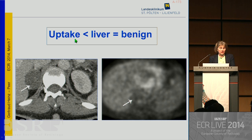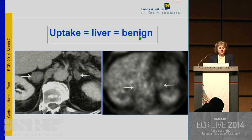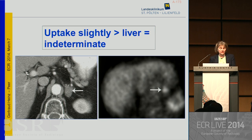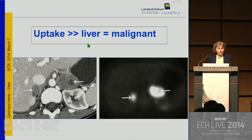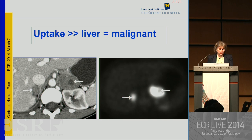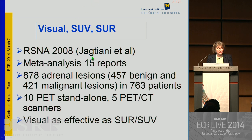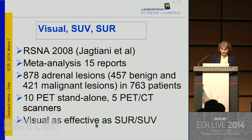In a patient with underlying rectal cancer presenting with a small right adrenal mass, there is clearly increased uptake of the FDG tracer indicating metastasis. As a general rule: if tracer uptake is below liver uptake, it is very likely a benign lesion; if equal to the liver, it is most likely benign; if slightly higher than the liver, the lesion is indeterminate; and if clearly higher than the liver, it is most likely a malignant lesion or metastasis. Yaktiani and coworkers confirmed that visual analysis is as effective as calculating the standard uptake ratio or value.